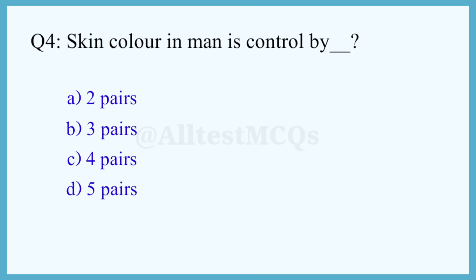Q4. Skin color in humans is controlled by? The correct answer is option C: Four pairs.